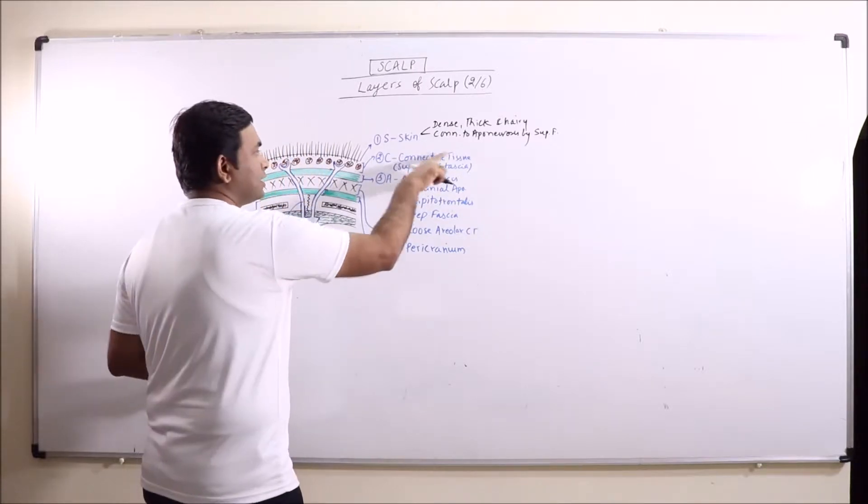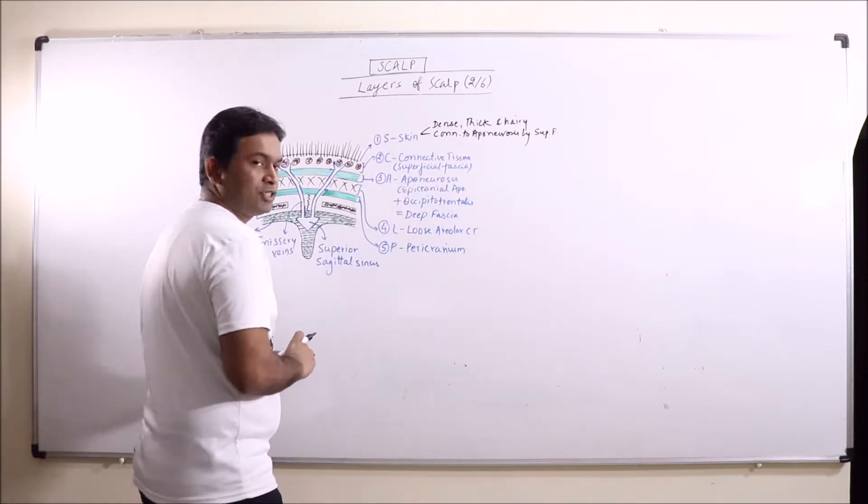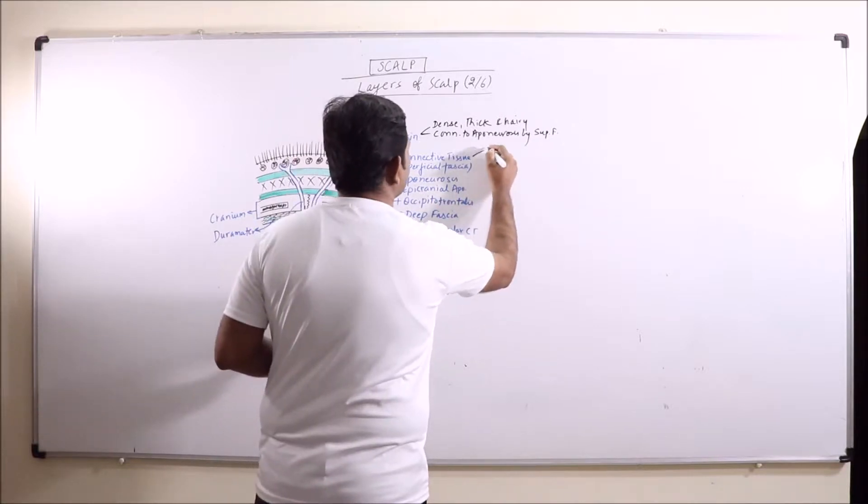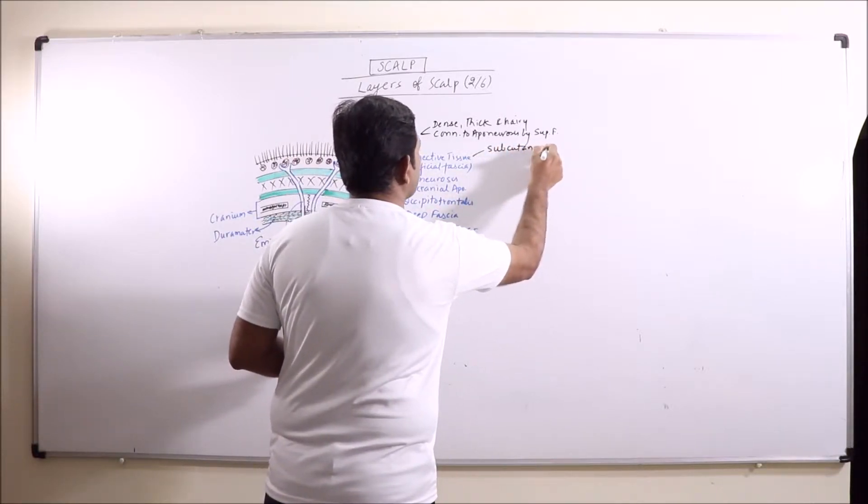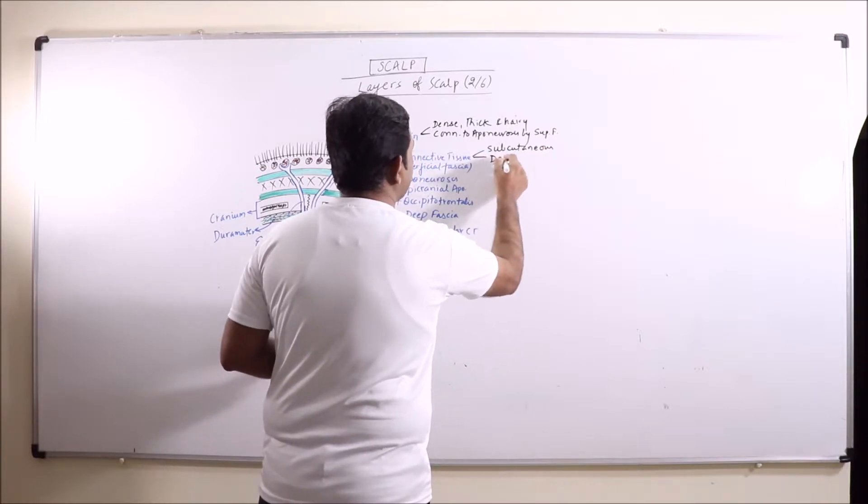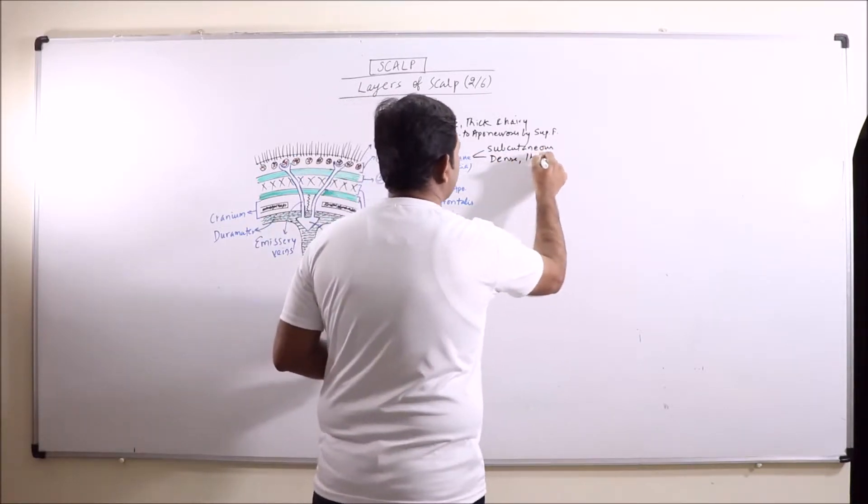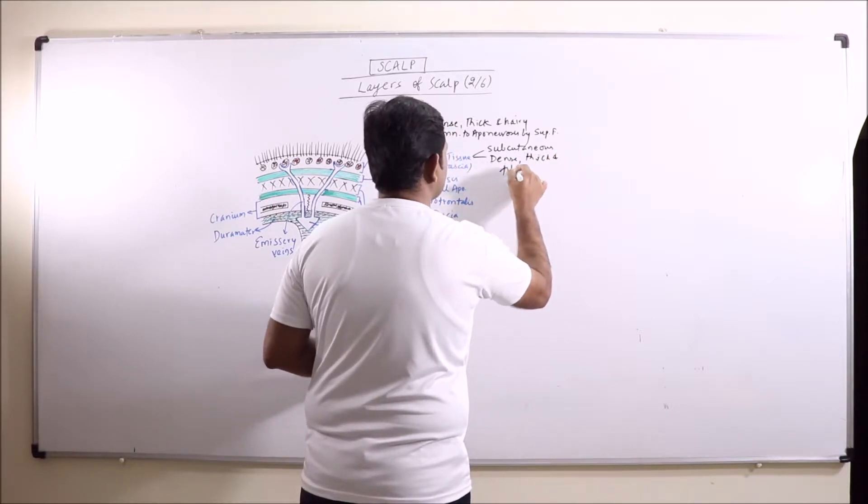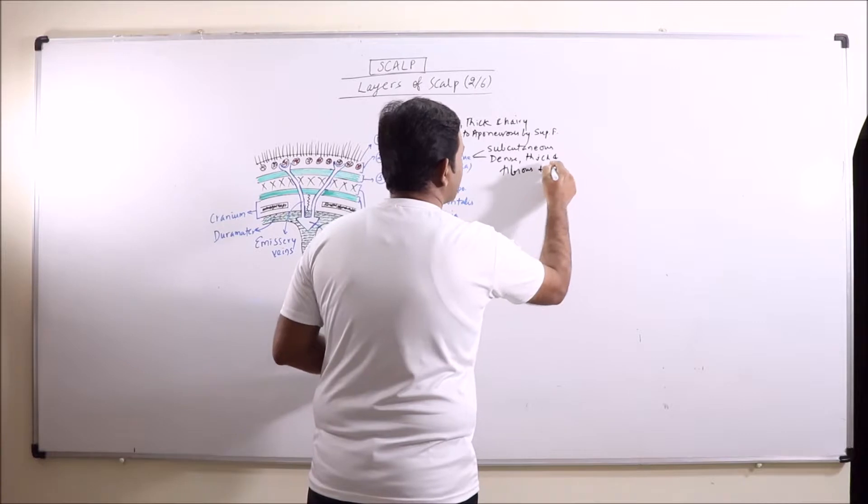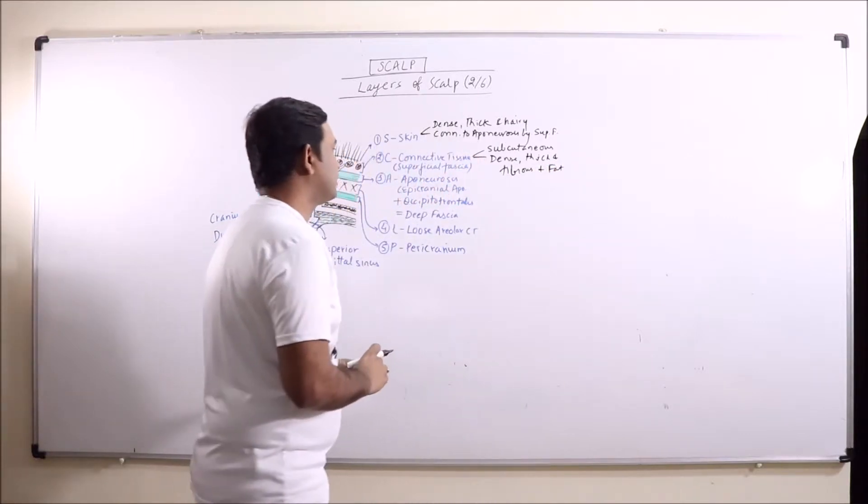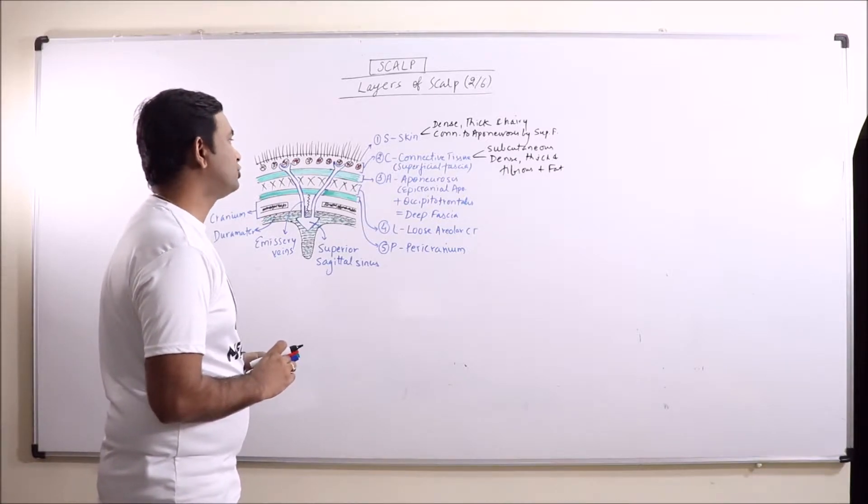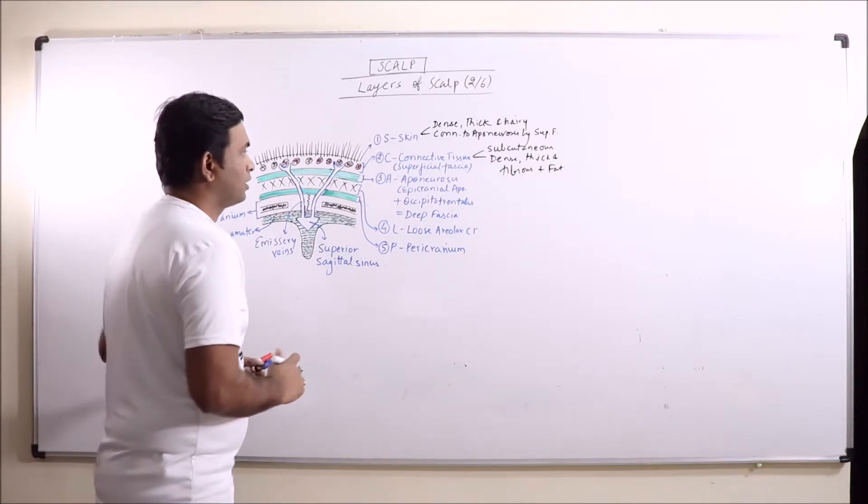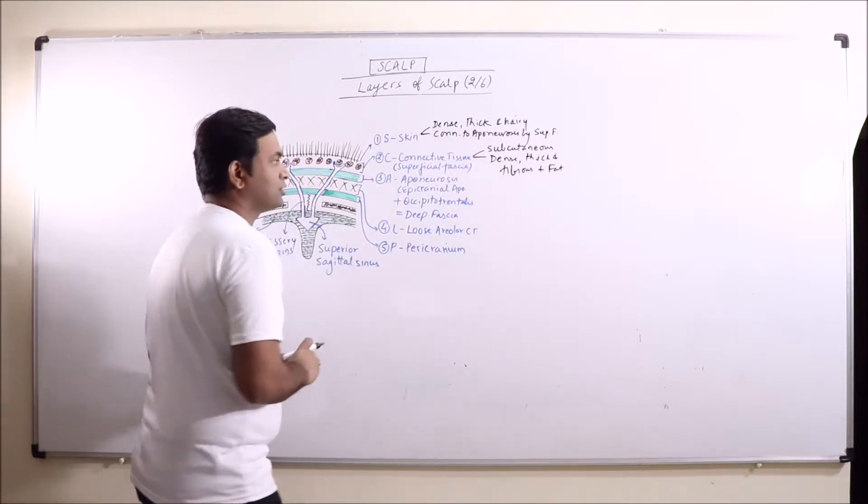Now the second layer is connective tissue or superficial fascia. It is located just below skin. So its location is subcutaneous. It is dense, thick and fibrous, plus some fatty tissue is also there. So connective tissue or superficial fascia connects the skin and the aponeurosis.